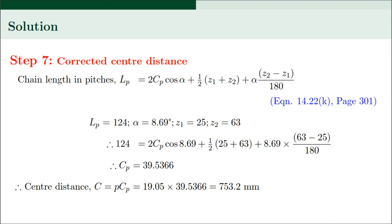The length of the chain L = P × L_P = 19.05 × 124 = 2362.2 mm. Since the chain length changed due to rounding, we calculate the corrected center distance by substituting L_P = 124, α = 8.69°, Z1 = 25, and Z2 = 63 back into the chain length equation. The corrected C_P = 39.5366, giving a corrected center distance C = 19.05 × 39.5366 = 753.2 mm.